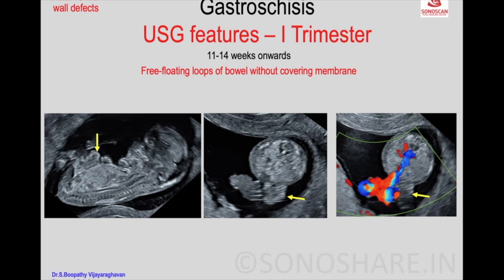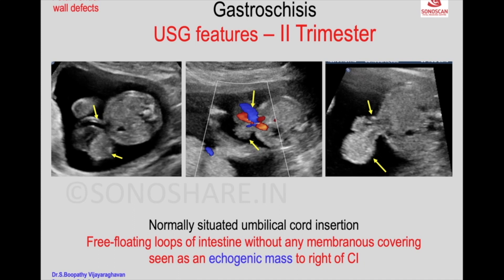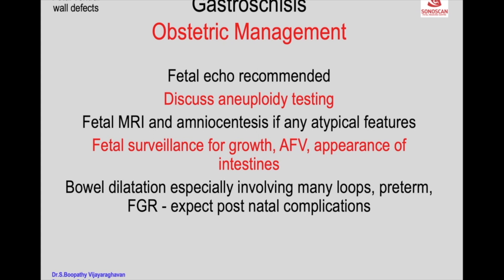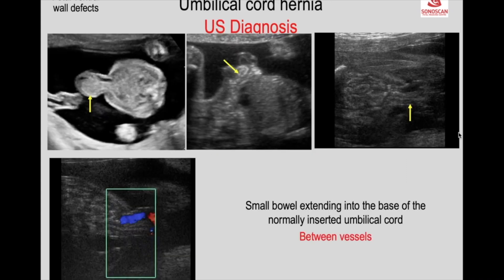In gastroschisis, there is a defect along the umbilical ring without a covering membrane, seen in both sagittal and axial scans, with an echogenic mass to the right of the cord insertion. This can occasionally mimic a non-enclosed lesion. Constriction due to obstruction at the site of herniation can cause irritation of bowel loops, resulting in preterm birth, fetal growth restriction, and color Doppler will show that the herniation is between the umbilical vessels.